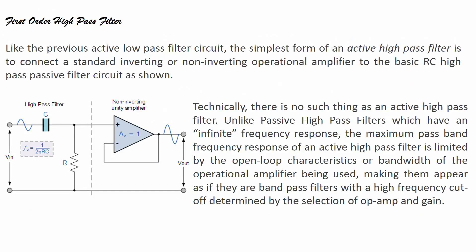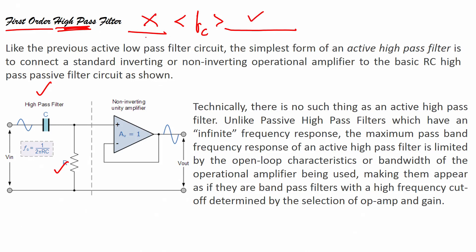For a first order active high pass filter: it is first order because there is 1R and 1C; it is high pass because it allows frequencies above the critical frequency to pass and stops frequencies below the critical frequency. It is an active filter because we are using a non-inverting amplifier.